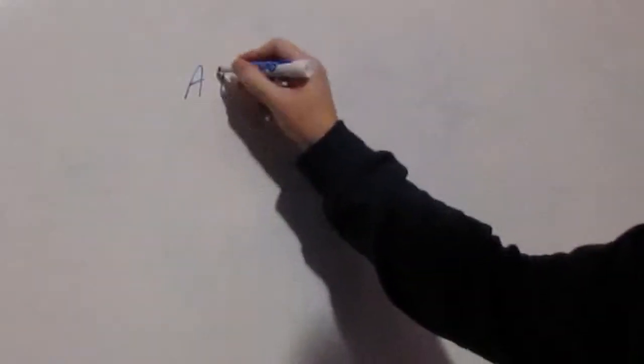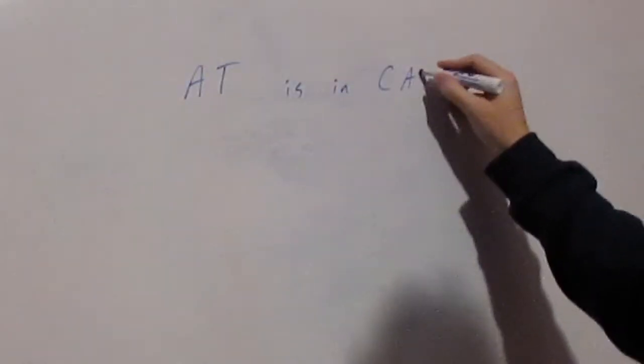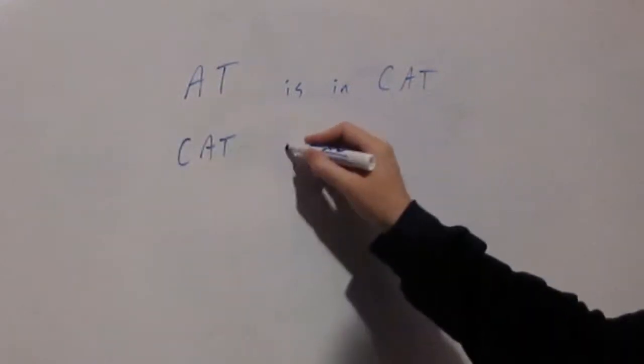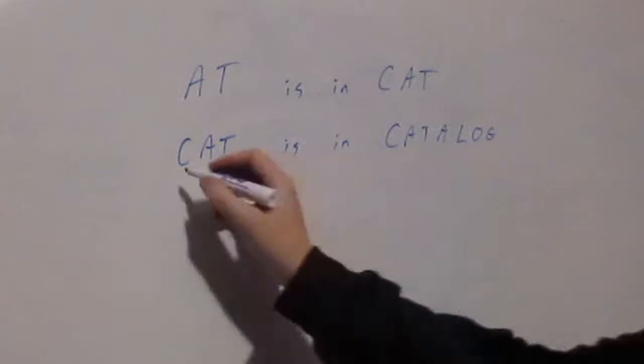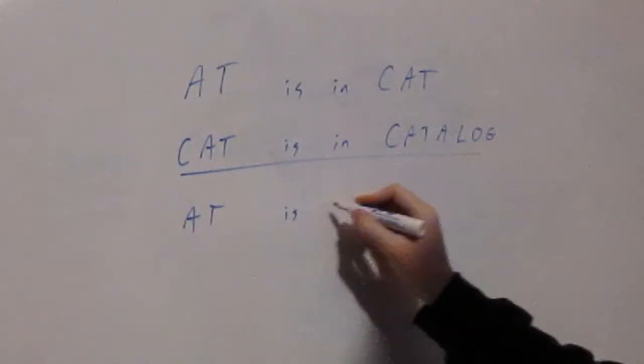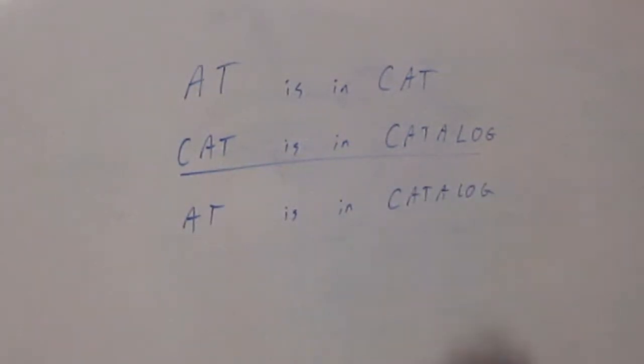But there's a different way that we could order the words together. Let's suppose that instead of alphabetical order, we use the isin operator to define a relationship between words. So the word at is in the word cat, and cat is in catalog. This operator is transitive, so you could infer from these two relations that at is in catalog.